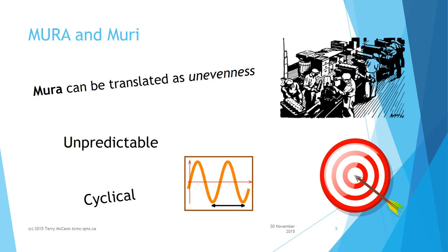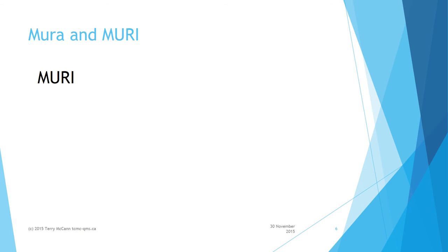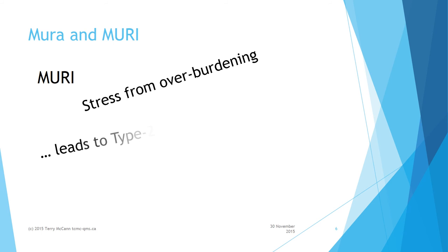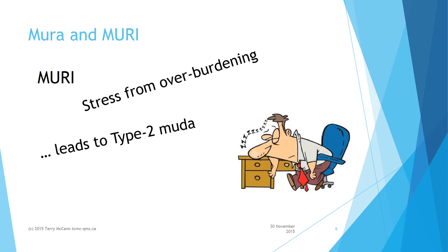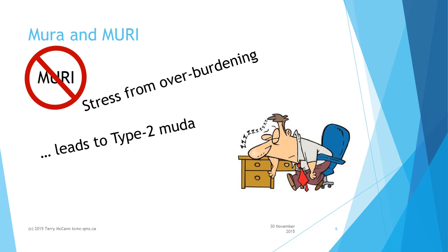Whether cyclical or unpredictable, the result is an uneven flow of production with periods of high pressure and other much slower or idle periods. Muri is stress on the system, equipment, and people due to overburdening. Muri accompanies mura during high-demand production periods when the organization strives to meet excess demand. Muri often results in various forms of muda due to fatigue, system breakdowns, poor decision-making, sick leave, and even staff turnover. The lean principle of respect for people means muri is frowned upon — not just because it produces unnecessary muda, but because of the burden it places on the workforce.